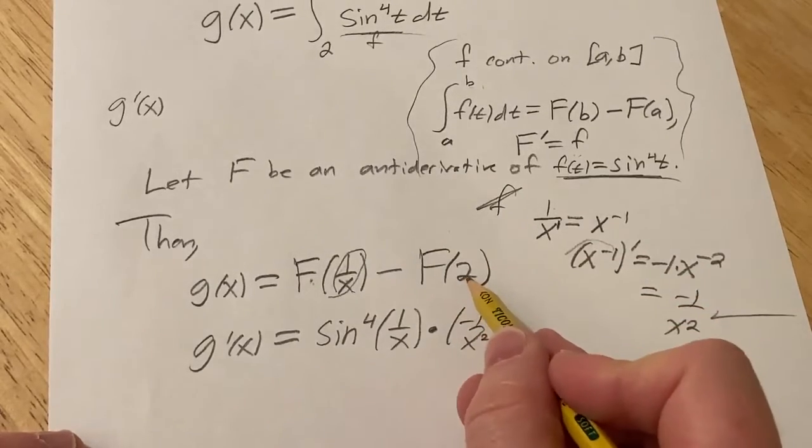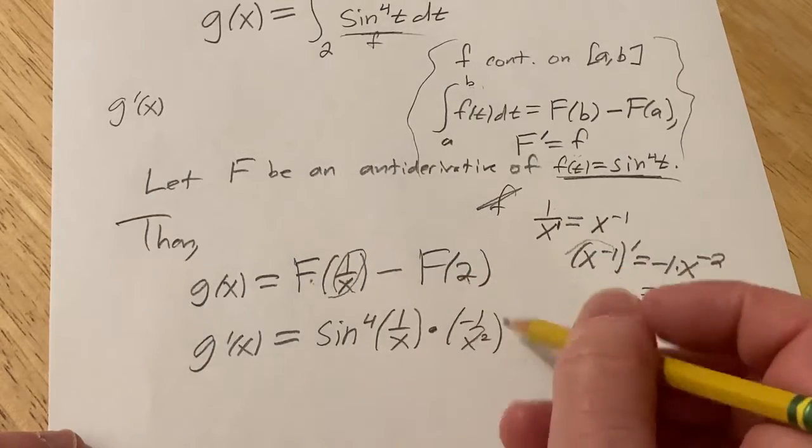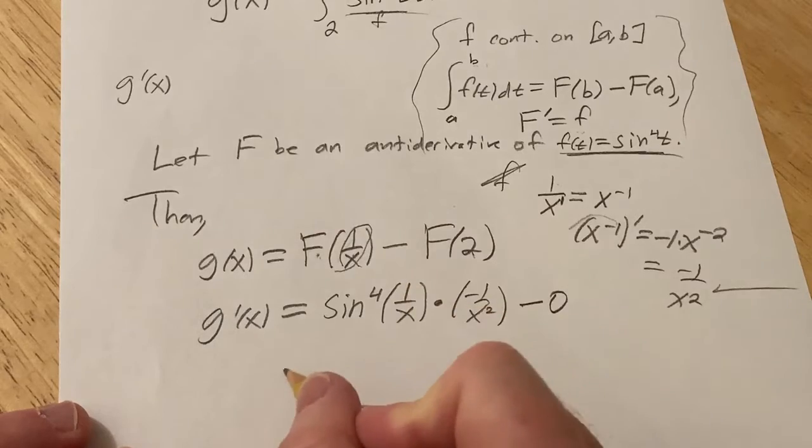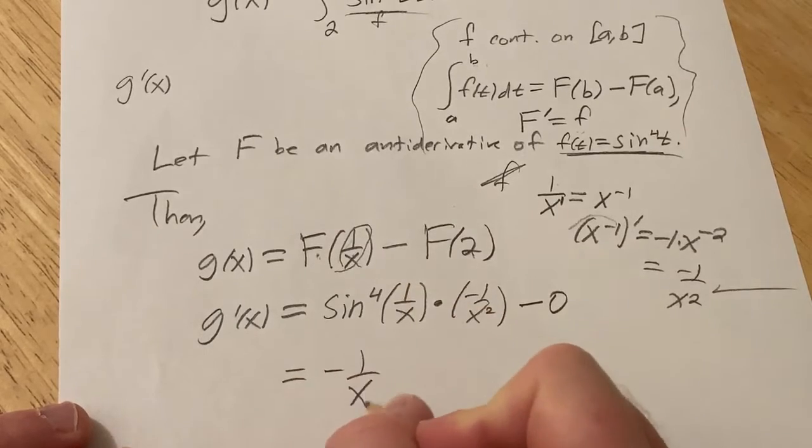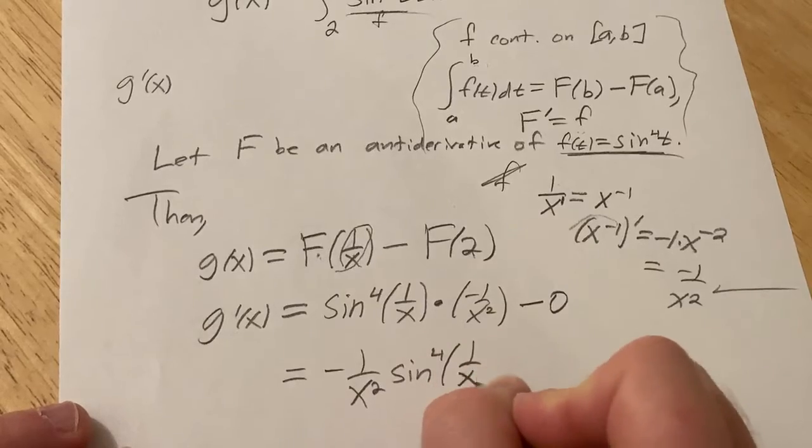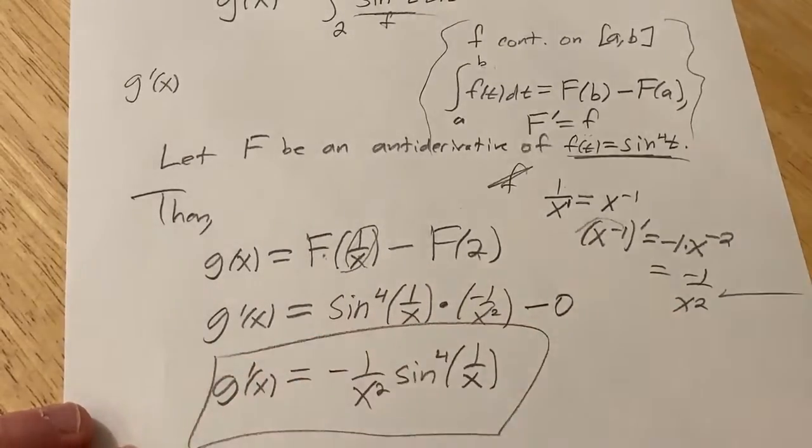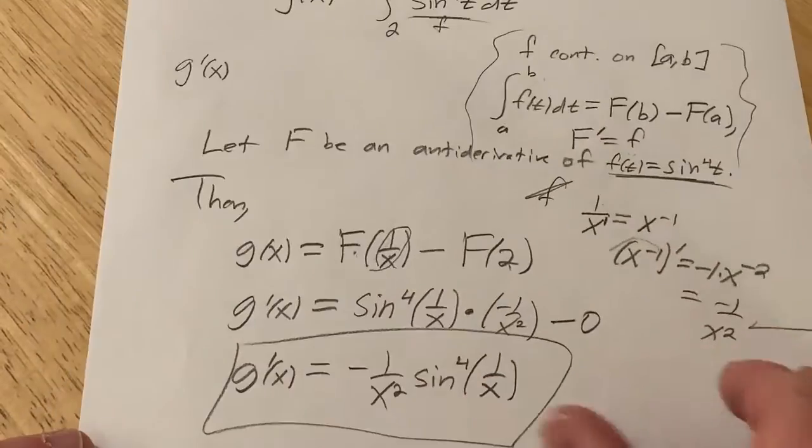And the derivative of this is 0, because this is a constant, right? You're plugging in a number into a function, so it's constant, so minus 0. So this is equal to negative 1 over x squared, sine to the fourth power of 1 over x. And that would be the derivative of our function, which is defined as an integral.